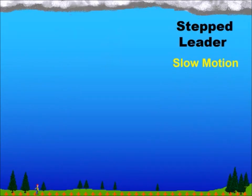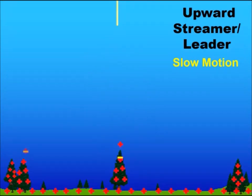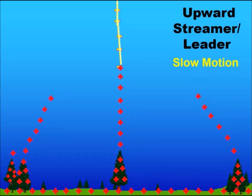The more common negative cloud-to-ground flash starts as what is called a step leader, where negative charge starts stepping its way toward the ground, just looking for a connection. As the step leader approaches the ground, opposite charges, called streamers, develop upward from the ground to meet it.